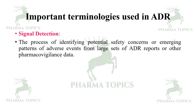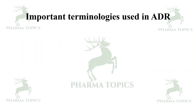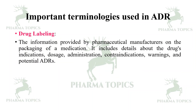Risk-benefit assessment involves evaluating the balance between the benefits and risks of a medication, considering the therapeutic effects of the drug versus the potential harm caused by adverse drug reactions. Drug labeling refers to the information provided by pharmaceutical manufacturers on the packaging of a medication, including details about indications, dosage, administration, contraindications, warnings, and potential ADRs.